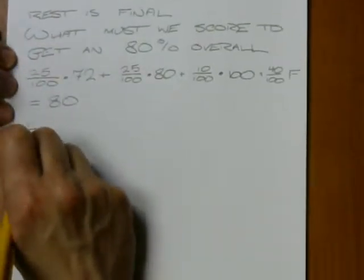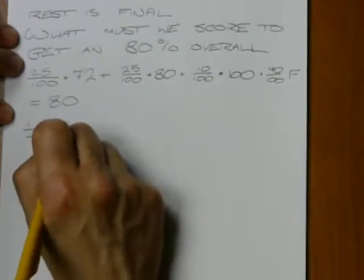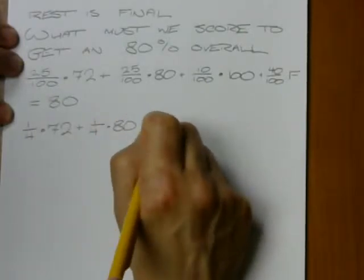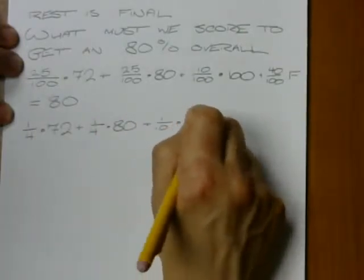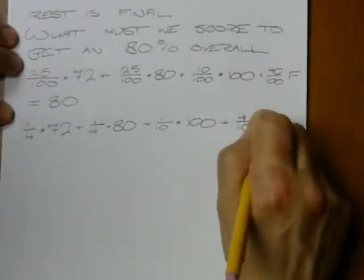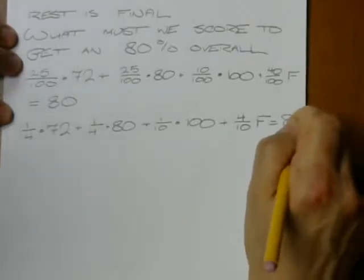So that gives me, well, 25 over 100 is 1 fourth of 72 plus 1 fourth of 80 plus 1 tenth of 100 plus 4 tenths of my final equals 80.